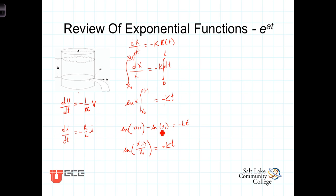Having combined these two log terms into a single log term, we can now exponentiate both sides, and on the left-hand side we get x of t over x-naught is equal to e to the minus k times t.